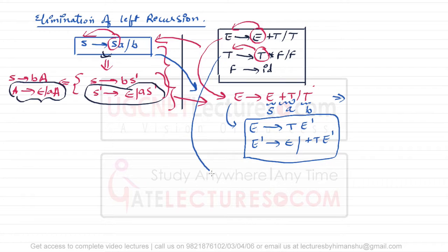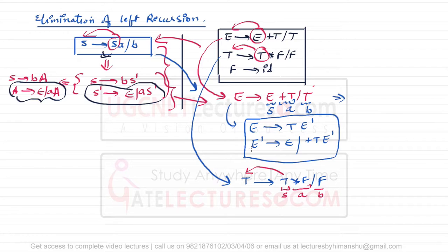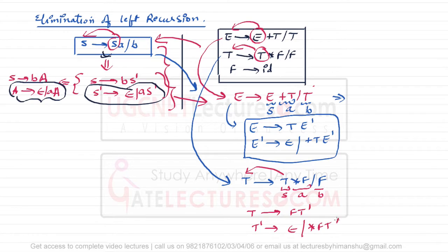Similarly, we eliminate left recursion from T derives T star F slash F. In this statement, because of T at the start there is a recursion. Comparing with the formula, T is S, star F is a, and F is b. Therefore we can write: T derives F T', and T' derives epsilon slash star F T'.